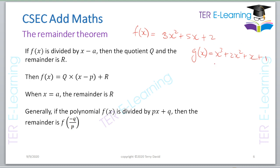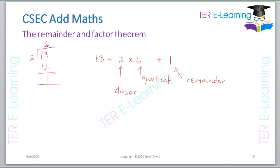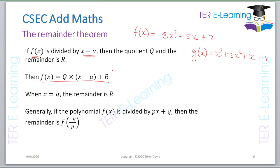Here is what the Remainder Theorem is saying. If we have a function f(x) and it is divided by (x − a), and the quotient is q and the remainder is r, then we can say that f(x) = q(x − a) + r. So in this case the divisor is (x − a), q is the quotient, and r is the remainder.